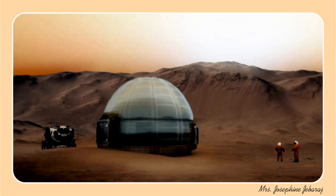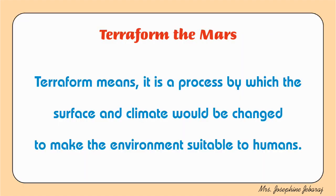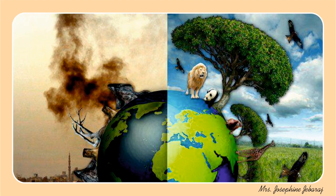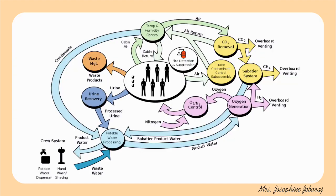Then Arirumadi consoled grandpa, saying not to worry because scientists are trying to terraform Mars. Terraform means a process by which the surface and climate would be changed to make the environment suitable for humans. But grandpa ended his talk saying, 'Nothing can be like the Earth, because all the life-supporting materials and elements on Earth are free, very natural, and fresh.'